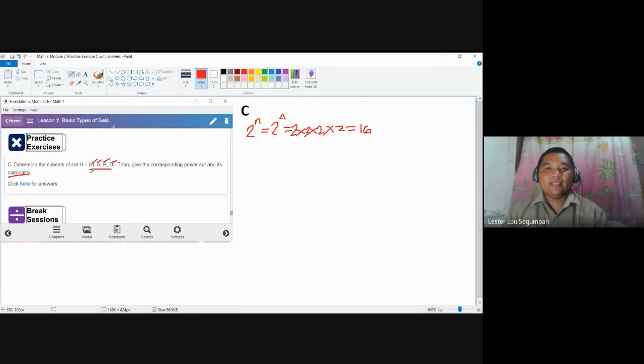we can create subsets of this by first choosing single elements. Or in short, we are going to make unit sets. 16 is the cardinality. We need to determine first the subsets and using those subsets create the power set. So first, we're going to use the unit sets.